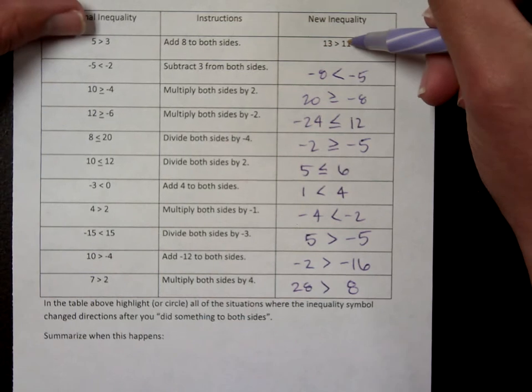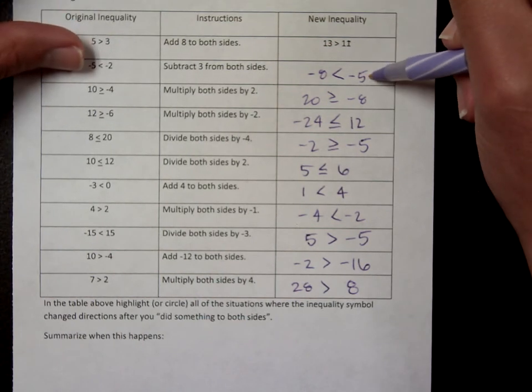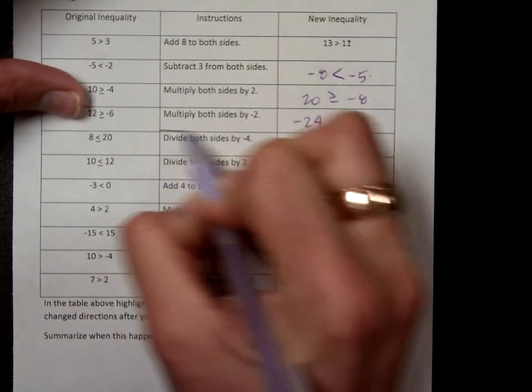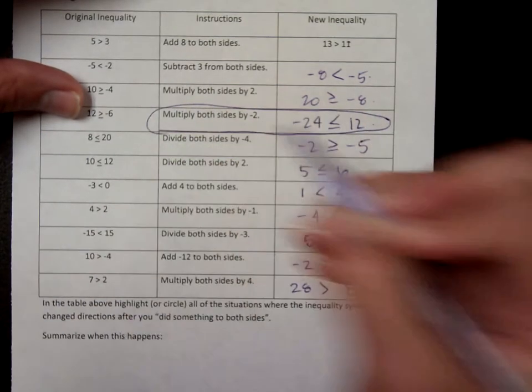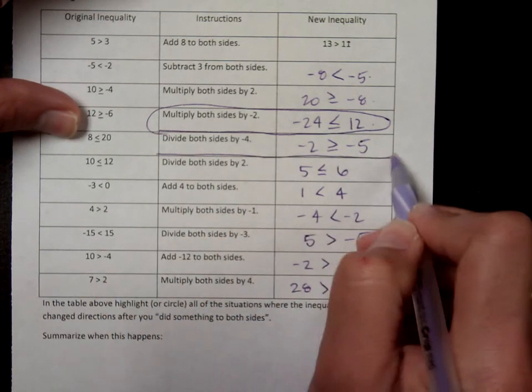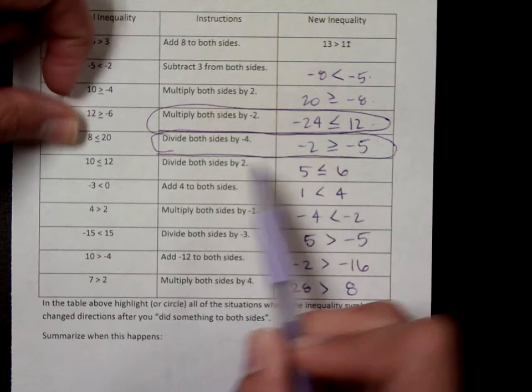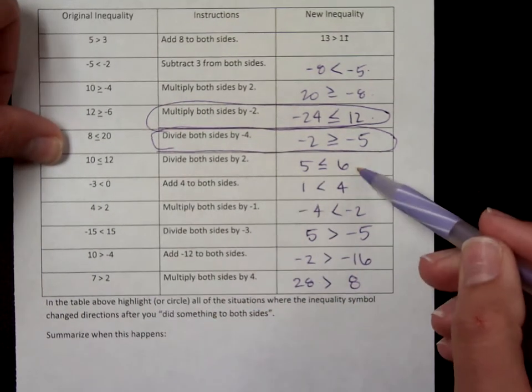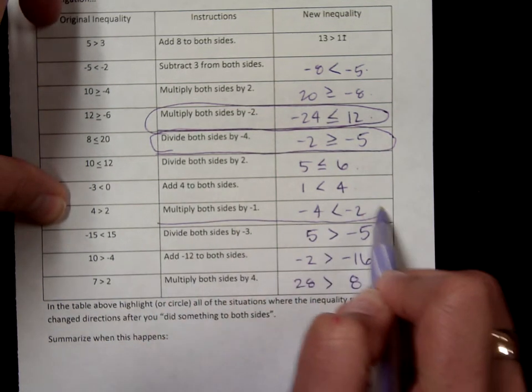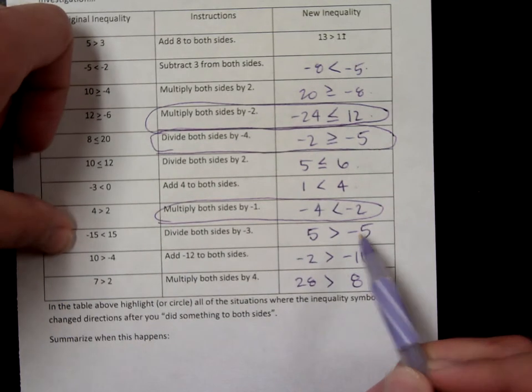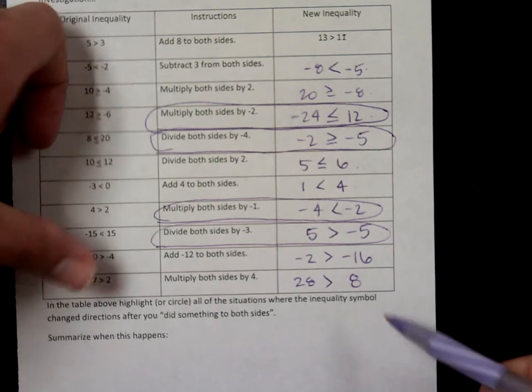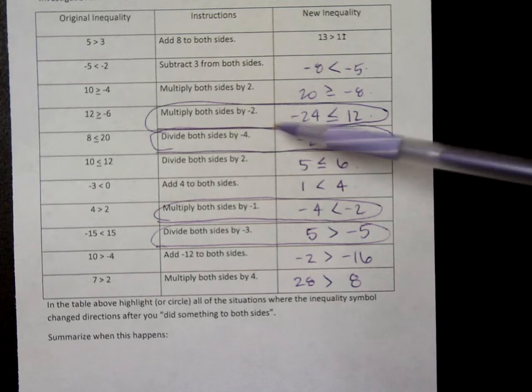First one stayed the same. Second one stayed the same. Third one stayed the same. Fourth one. Uh-oh, this one changed. So, circle that one. The fifth one, this one changed too. So, circle that one. This one stayed the same. Stayed the same. Changed. Changed. Stayed the same. Stayed the same. Okay, so, look at the four that you circled.